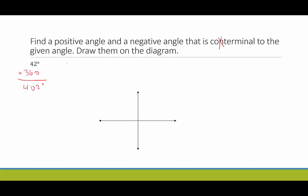To find a negative coterminal angle, we subtract 360 from 42, which gives us negative 318 degrees. So 402 degrees and negative 318 degrees are both coterminal with 42 degrees.